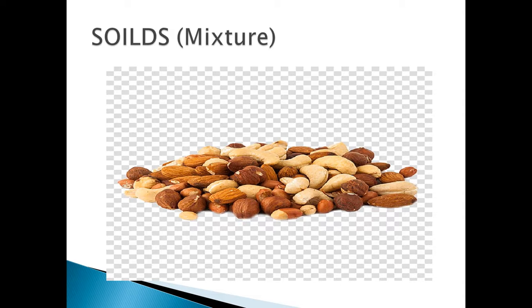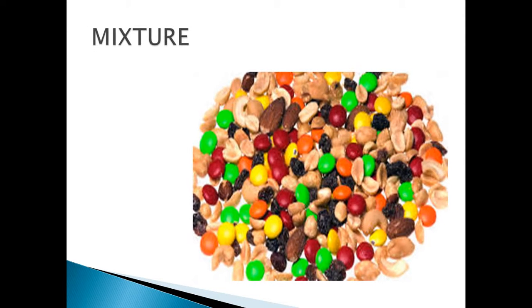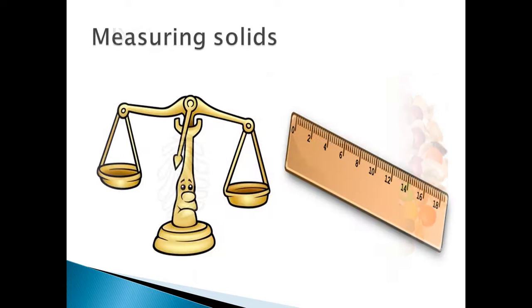What happens when you mix different types of solid? For example, you can mix different types of nuts and make a mixture. A mixture is made up of two or more things. How do we measure solids? We can use a balance to measure its mass and a ruler to measure its length.